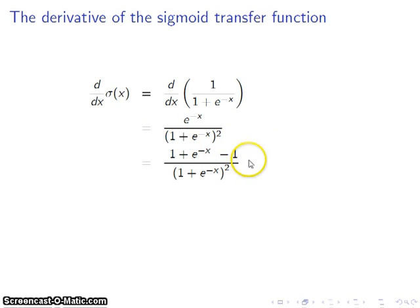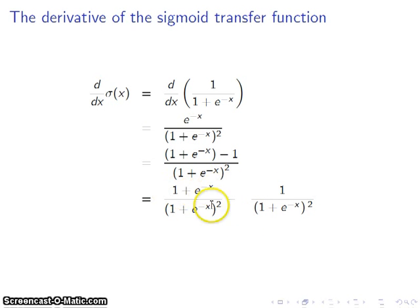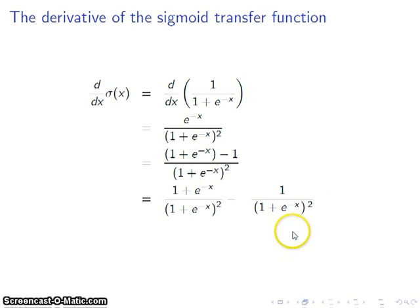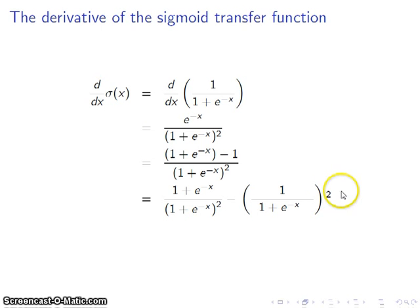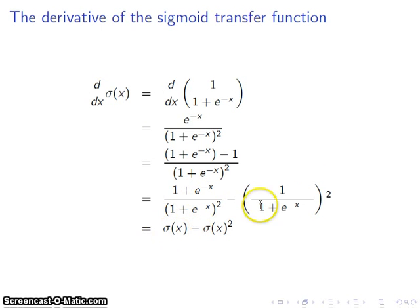And you can, in fact, see here — right there is how I want to group them, and I'm going to split this into two different fractions. 1 plus e to the negative x over 1 plus e to the negative x quantity squared — that's nice because one of those will cancel. Minus 1 over the denominator, which is 1 plus e to the negative x squared. This term on the right here is the whole thing squared, because 1 squared is 1. And this is nice because this right here is our original sigma. So we can go ahead and cancel this first term here to give us just sigma of x, and we'll rewrite this second term as sigma of x squared.